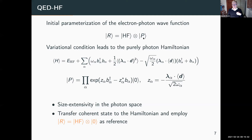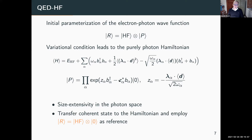We don't want to carry around these coherent states for the photons, so we prefer to transfer the unitary transformation to the Hamiltonian, then use a reference state which is the Hartree-Fock state times the photon vacuum. This gives a very nice Hamiltonian that explicitly shows origin invariance. The D operator here is the dipole operator, which also contains the nuclear contribution. For a neutral molecule the dipole moment is origin invariant, but by subtracting the average value over the electronic Hartree-Fock part, we ensure origin invariance for both the self-energy term and the bilinear term.